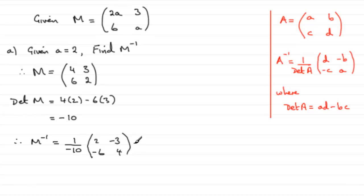And you could leave it like that, or you could multiply minus 1 tenth into each of these values. And if you do that, you've got an alternative matrix, and that would be minus 0.2, plus 0.3, 0.6, and minus 0.4. And so you've got that alternative version.